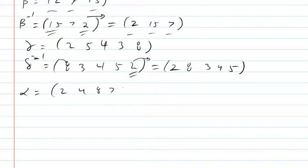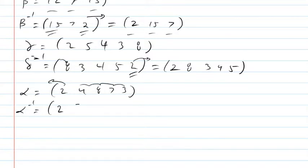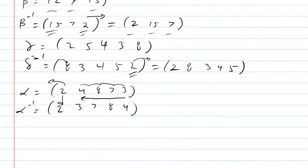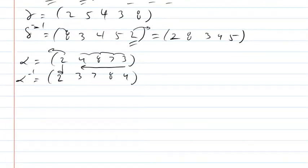If I have something like (2, 4, 8, 7, 3), I can go right to the inverse by still writing two as the first number, but then writing the numbers going to the left in the original cycle. So the inverse is (2, 3, 7, 8, 4) — basically writing the first number still, and then going to the ends and writing the numbers backwards.